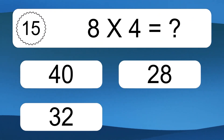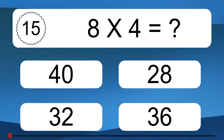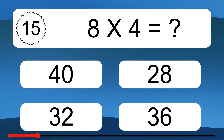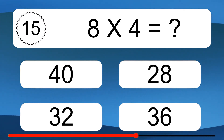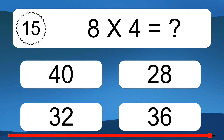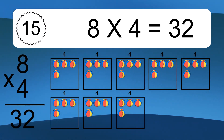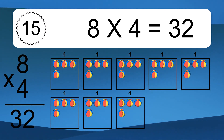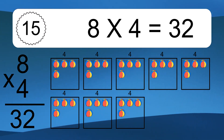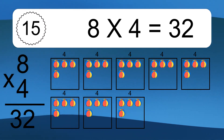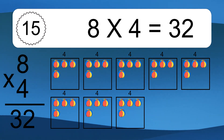8 times 4 equals what? We have 8 boxes, and each box has 4 colorful balls inside. If you count all the balls in all the boxes together, you will have 8 times 4 balls. This equals 32 balls.